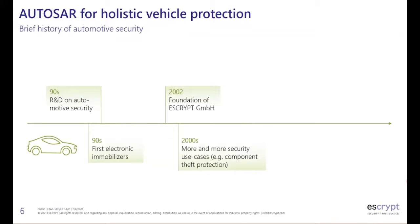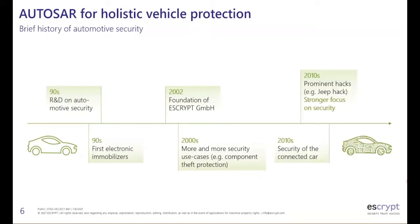Automotive security continued to gain interest and led to the foundation of several dedicated companies, including ESCRYPT GmbH, founded in 2002 as a spin-off of the chair for embedded security at Ruhr-Universität Bochum. In the 2000s, more security use cases were introduced, such as component theft protection. Today, security is very much in focus due to prominent hacks like Jeep Cherokee that showed cars are vulnerable, legislative reasons like UNECE regulations, and new use cases like connected vehicles and automated driving.